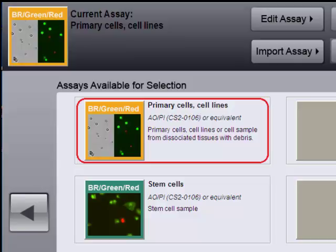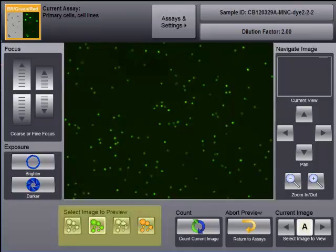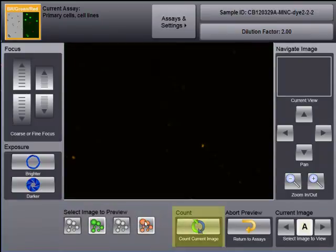A dual fluorescent assay is recommended for analysis of primary cells from heterogeneous samples such as whole blood, cord blood, and bone marrow. After previewing the image, a click of a button starts counting.